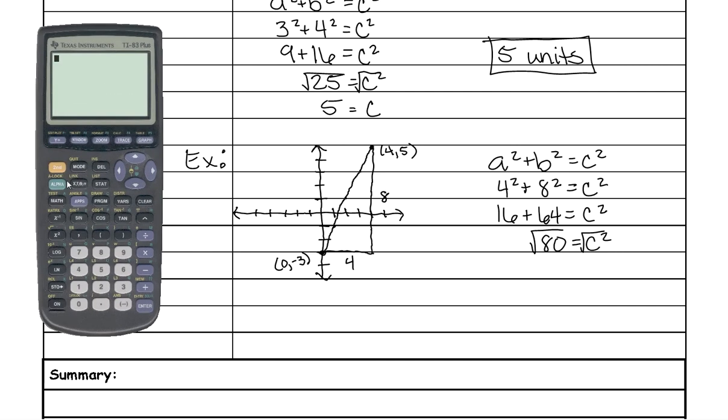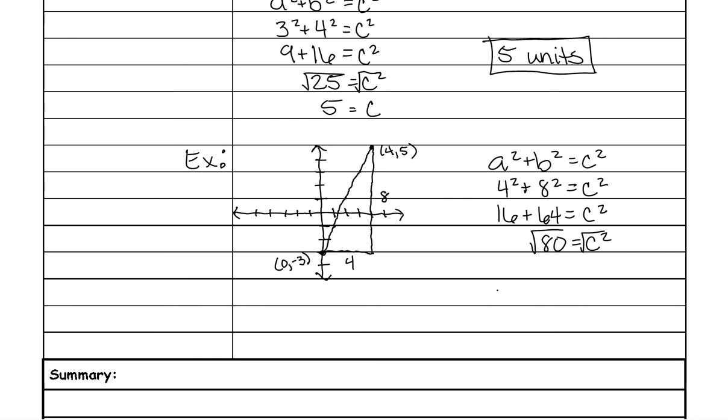And on this calculator is set up just like our other ones. It just is an older model, but you do everything the same way. So to do a square root, you would hit second, and then this button right here, because right above it is our square root symbol. So second and the x squared, and then we're going to put in 80. And that tells us that our distance is 8.94 units.